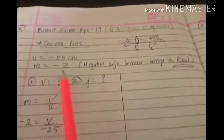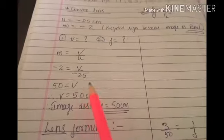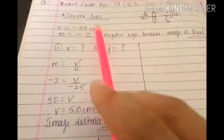So image distance is 50 cm, that's the first answer. Now you know V, you know U, now you can find F using the lens formula.